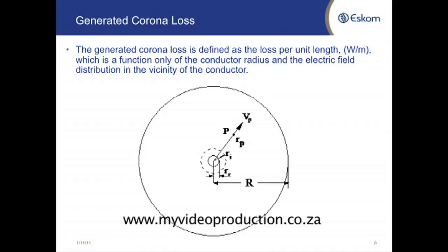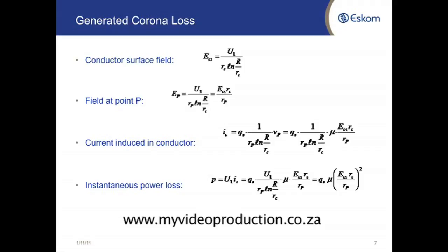There is no capital R here, which is the radius of the bigger cage. So you find that this quantity here, which is a power loss, is independent of the cage diameter or radius.